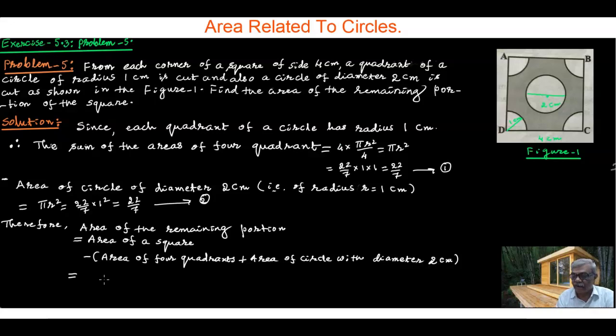is 4 × 4 minus the area of 4 quadrants, which is 22/7, minus the area of the circle with diameter 2, which is again 22/7. This is from equations 1 and 2.